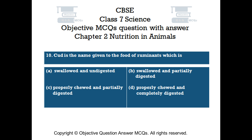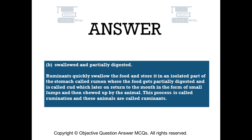Question number 10. Cud is the name given to the food of ruminants which is: Option A: Swallowed and undigested. Option B: Swallowed and partially digested. Option C: Properly chewed and partially digested. Option D: Properly chewed and completely digested. The right answer is Option B: Swallowed and partially digested. Ruminants quickly swallow food and store it in an isolated part of the stomach called the rumen, where food gets partially digested and is called cud. The cud later returns to the mouth in small lumps to be chewed. This process is called rumination.